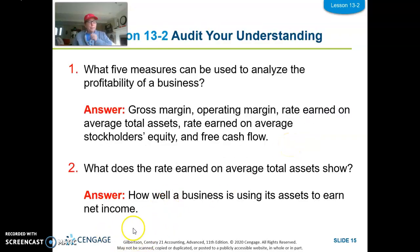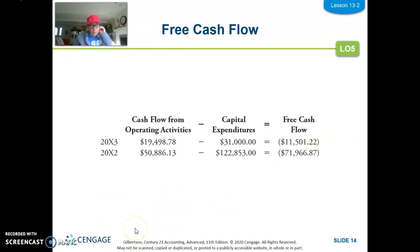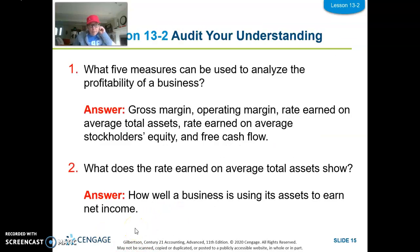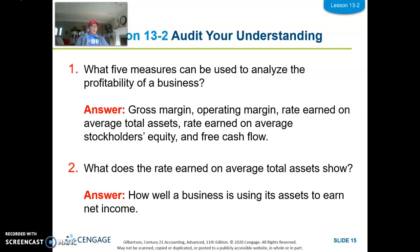That wraps up all of our profitability analysis. There are five different ratios we looked at: gross margin, operating margin, rate of return on average assets, rate earned on average equity, and free cash flow.